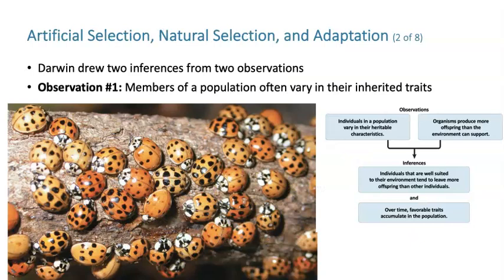With this idea of what happens under human control, Darwin came up with his first observation. Members of a population are not exactly the same — they have variation in traits. Importantly, these traits are inheritable: you can pass on color, spot size, and so forth. Observation one: members of a population often vary in their inherited traits.